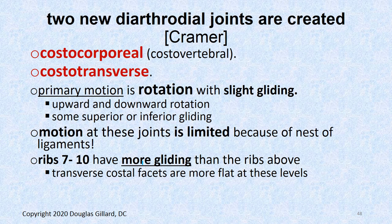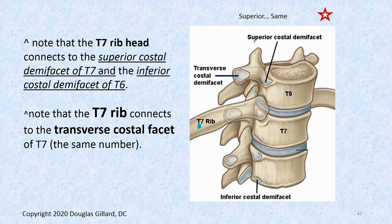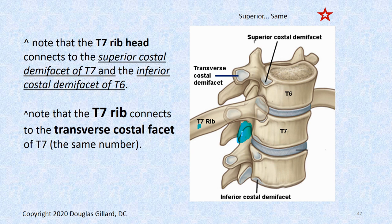Two new diarthroidal joints are created here. These are just like the zygapophyseal joint — or facet joint as it's called in the real world — which is a true diarthroidal joint with a capsule and a synovial membrane. In fact, a thick synovial membrane folds inside and can get pinched. These costovertebral joints similarly have capsules and synovium inside, and they can get stuck and pinched and cause pain in patients. All three of these are true diarthroidal joints.